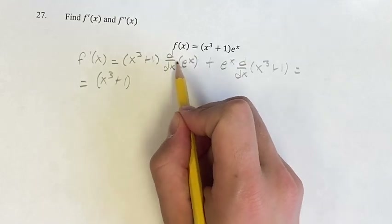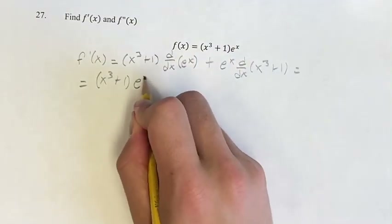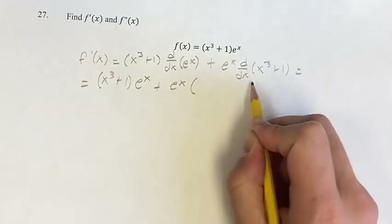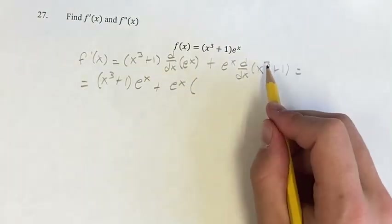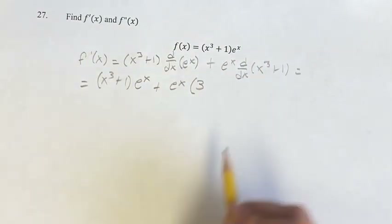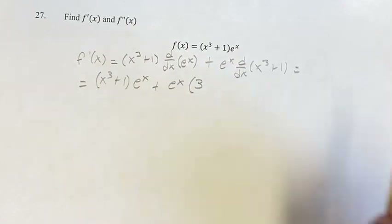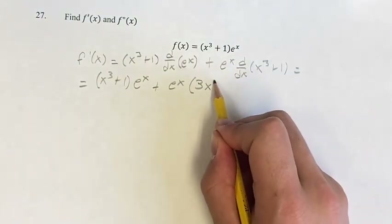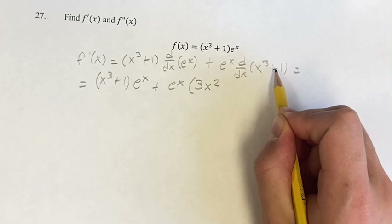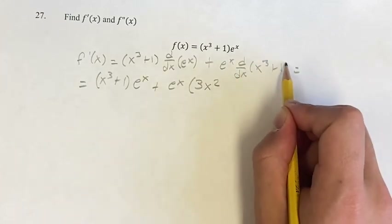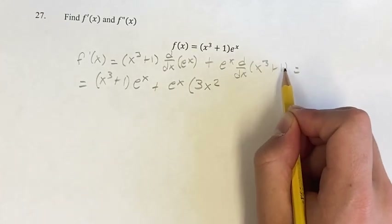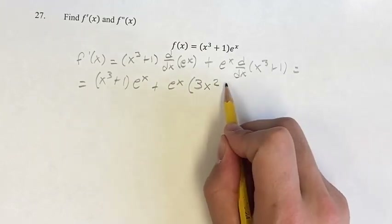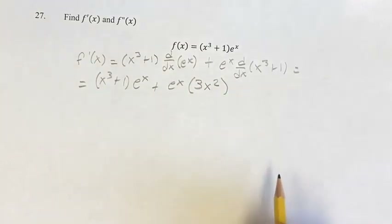The derivative of e to the x is just e to the x, plus e to the x times the derivative of x cubed. We have a power function, so you take the exponent, bring it down to the coefficient, and then subtract 1 for your new exponent. 3 minus 1 is 2, plus the derivative of 1. 1 is a constant, so its derivative is just 0. So this is 3x squared plus 0, which is just 3x squared.